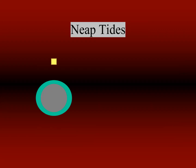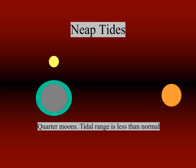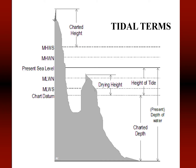Neap tides are tides of a decreased range which occur during the moon's first and last quarter. At these quarters, the sun and the moon are separated by 90 degrees as viewed from the earth, so the solar tidal force partially cancels the moon's tidal force. At these points in the lunar cycle, the tidal range is at its minimum. 'Neap' is an Anglo-Saxon word meaning 'without power.' Spring tides result in high waters higher than average and low waters lower than average, while neap tides result in less extreme tidal conditions. There is about a seven-day interval between spring tides and neap tides.